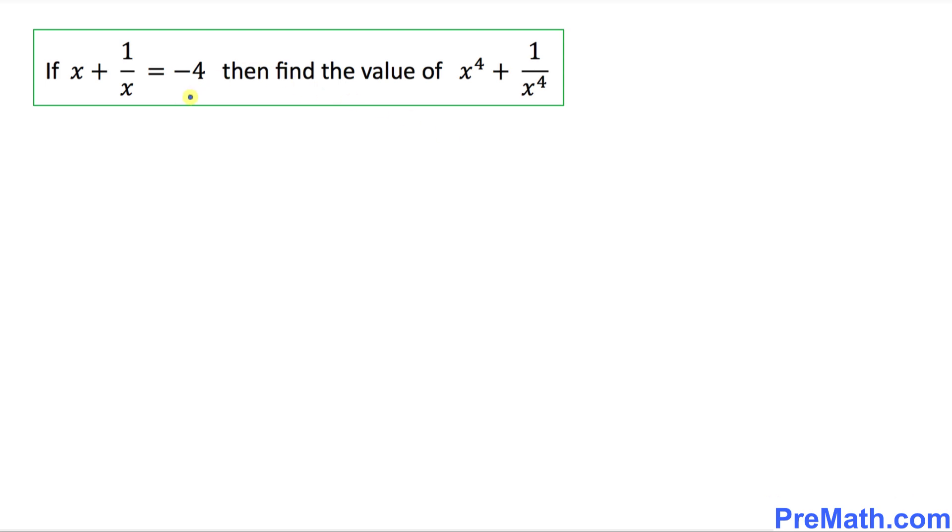If x plus 1 over x equal to negative 4, then we are asked to find the value of x power 4 plus 1 over x power 4. And we can rephrase this problem this way as well: x power 4 plus 1 over x power 4 equals to what value if x plus 1 over x equal to negative 4.